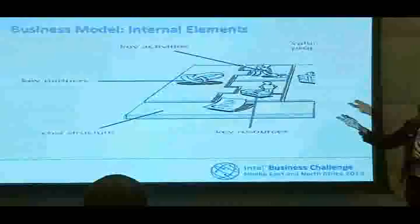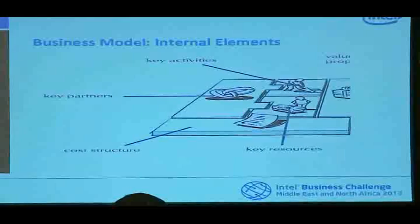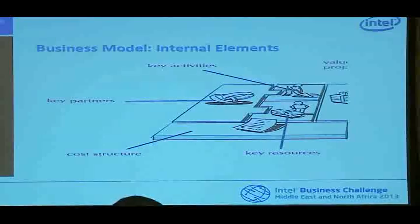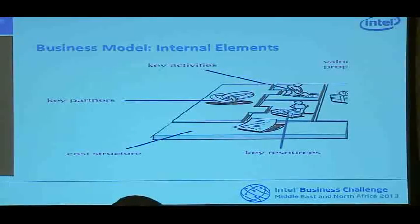Also, on the internal elements — now that you have your external elements, all of the customer segments, your revenue, etc. — you need to make sure that you have your internal organization in place. From your resources, whether it's people or physical, your activities, processes, workflows, your partners — it's not always a must that you have partners, but at some point you might. And of course your cost structure. It's not only knowing what your revenue is going to be, but also what you're going to spend your money on and how.